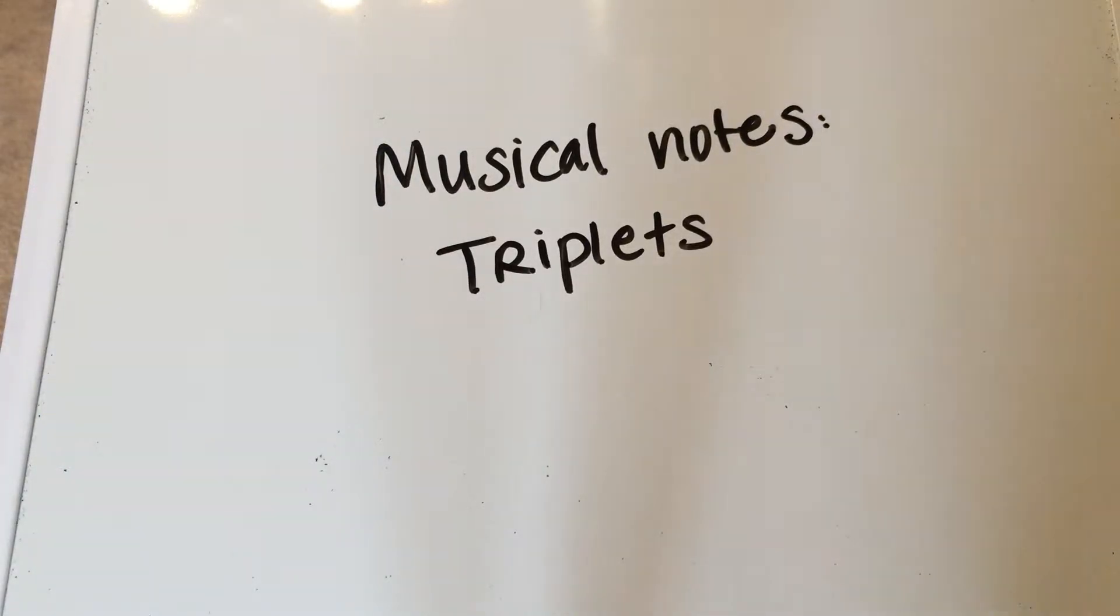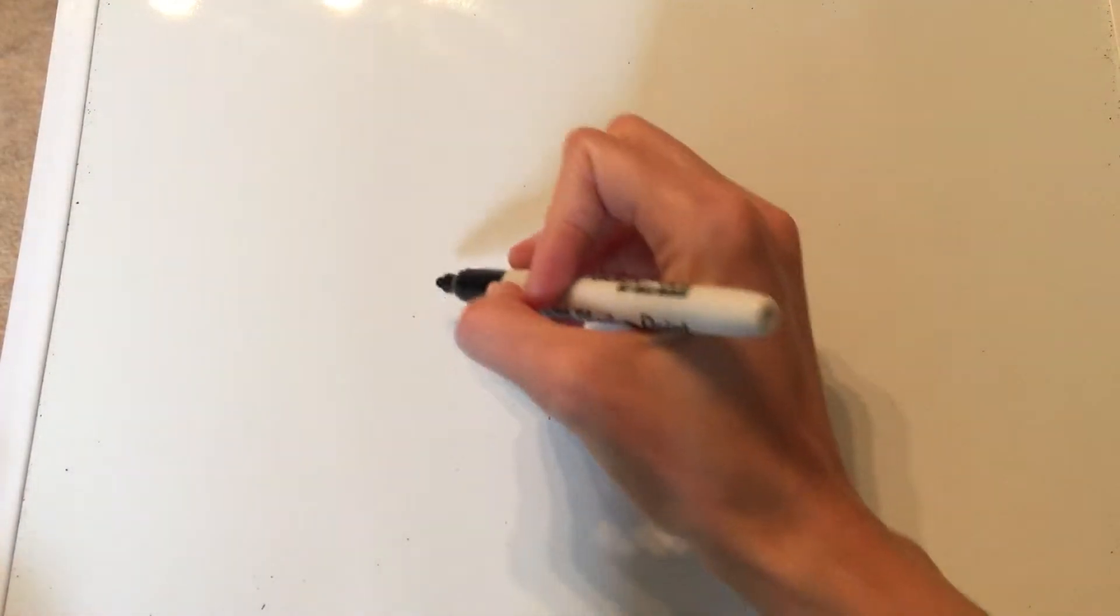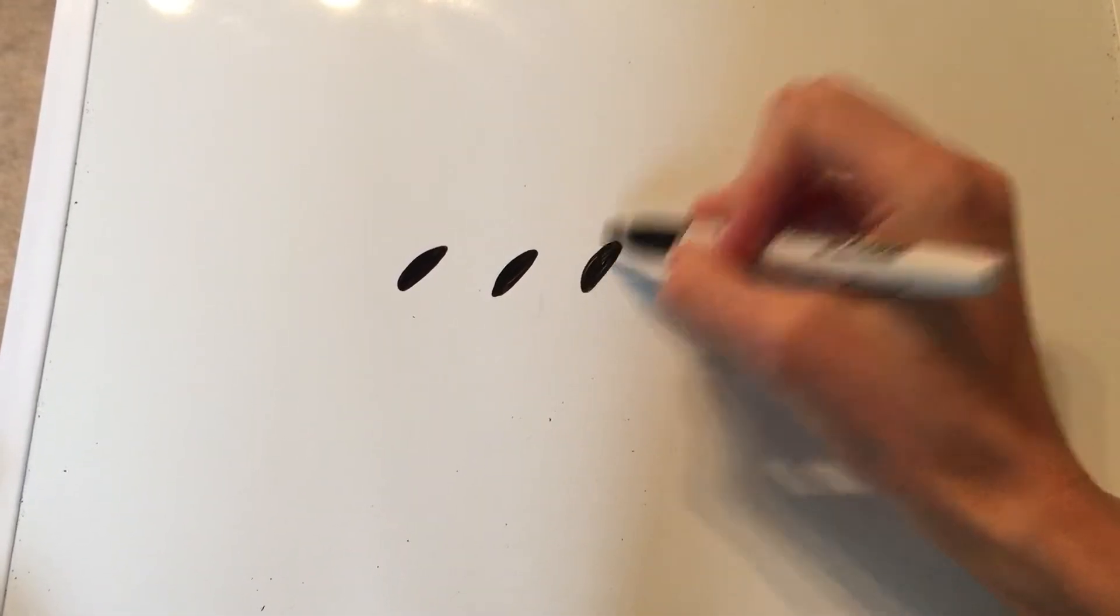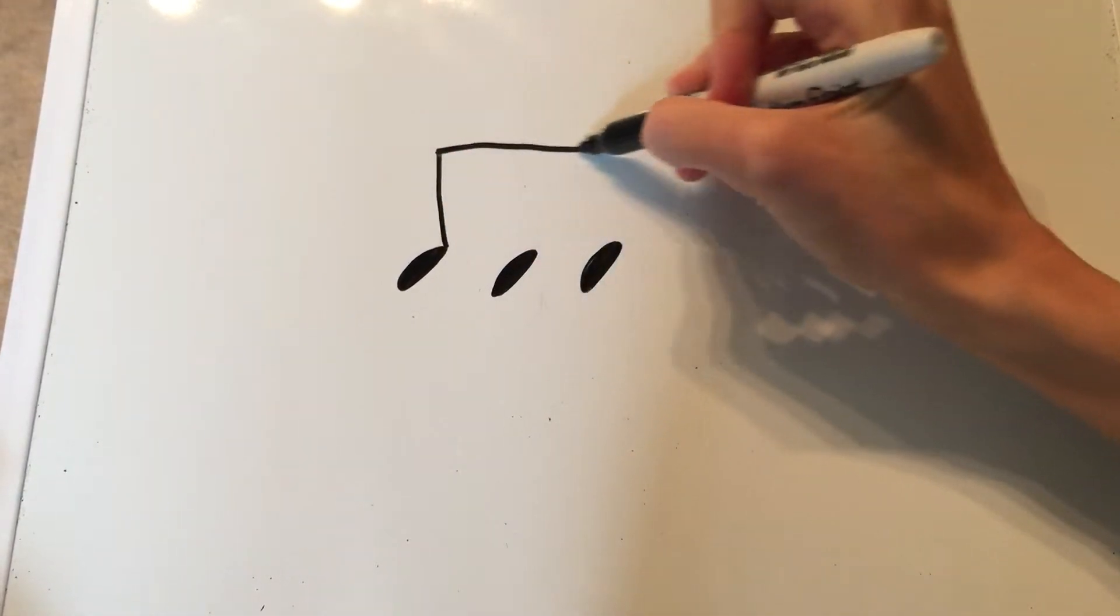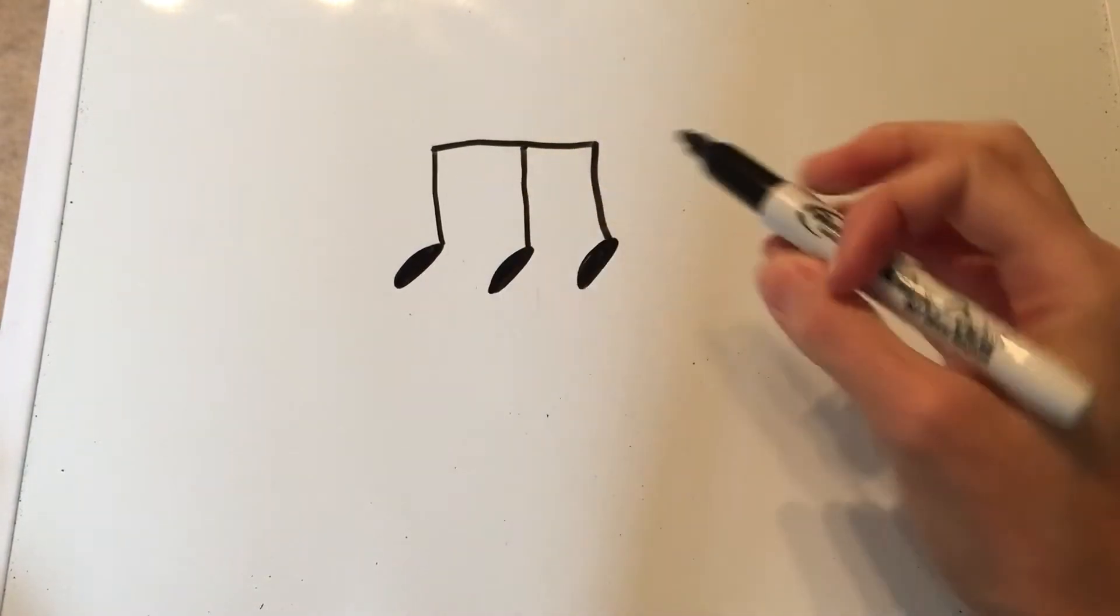This clip is about musical notes, and it's going to focus on triplets. So a triplet is where there's three, they're kind of like eighth notes, but not really, because there's only three of them, and they count for one beat.